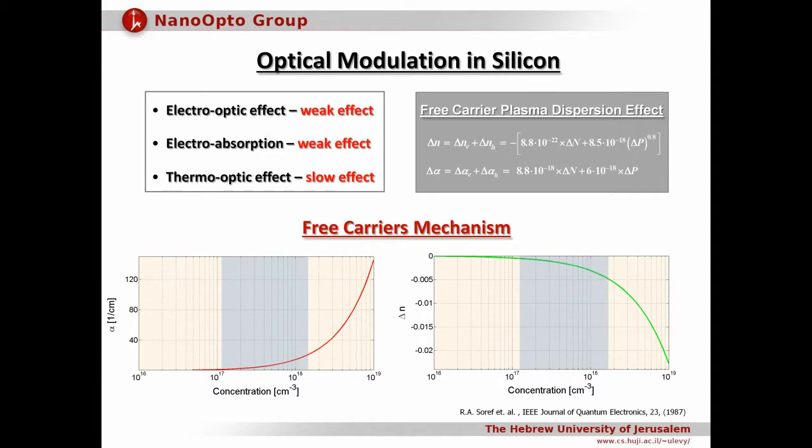One of the critical elements for on-chip silicon photonic application is a silicon electro-optic modulator. Due to the weak electro-optic effect, optical signal modulation in silicon is often achieved by the free carrier plasma dispersion effect, where the changes in the free carrier concentration induce variations in both real and imaginary parts of the complex refractive index.